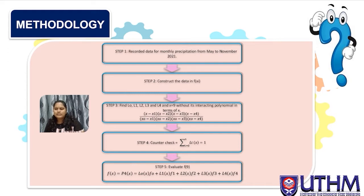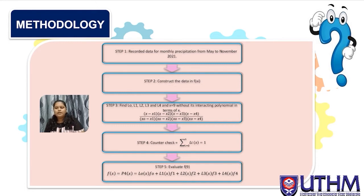Following are the steps used to estimate the missing data. Step 1: Collect data for monthly precipitation from May to November 2021. Step 2: Construct the data in table format. Step 3: Find L0, L1, L2, L3, and L4 at x equal to 9 (since it is September) without its interpolating polynomial in terms of x. Step 4: Counter-check with the formula — the sum of Li(x) from i=0 to n equals 1. Finally, evaluate f(9) with the formula P(x) = L0·f0 + L1·f1 + L2·f2 + L3·f3 + L4·f4.